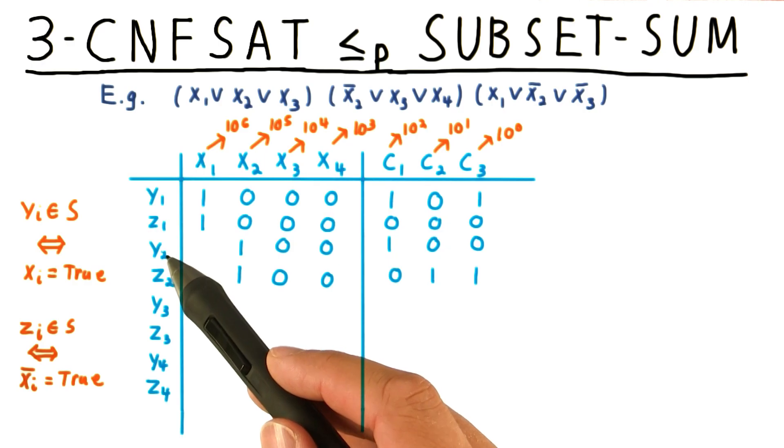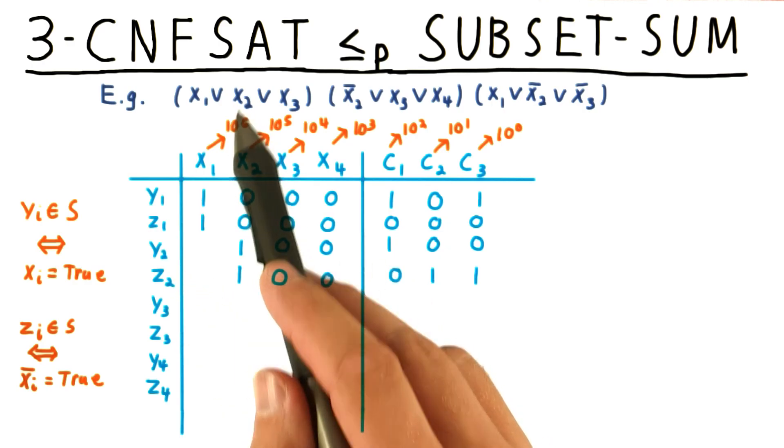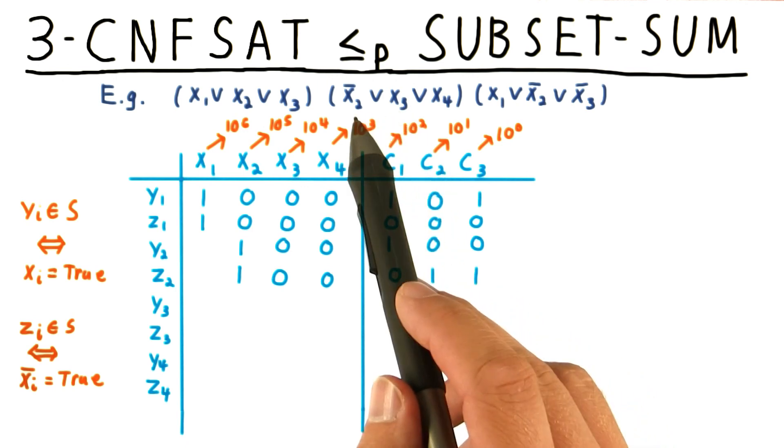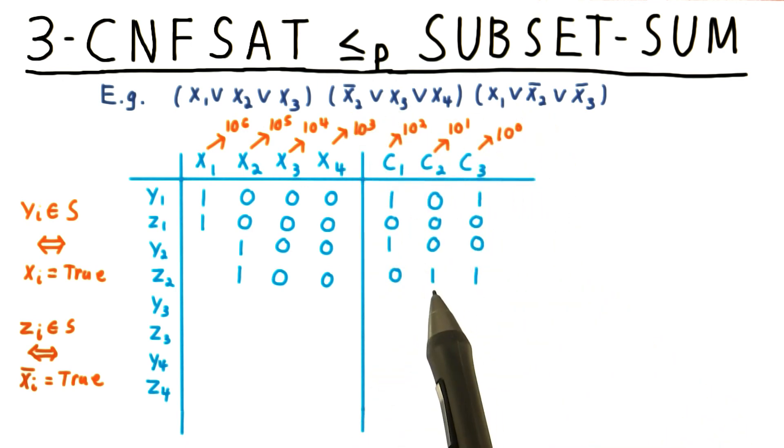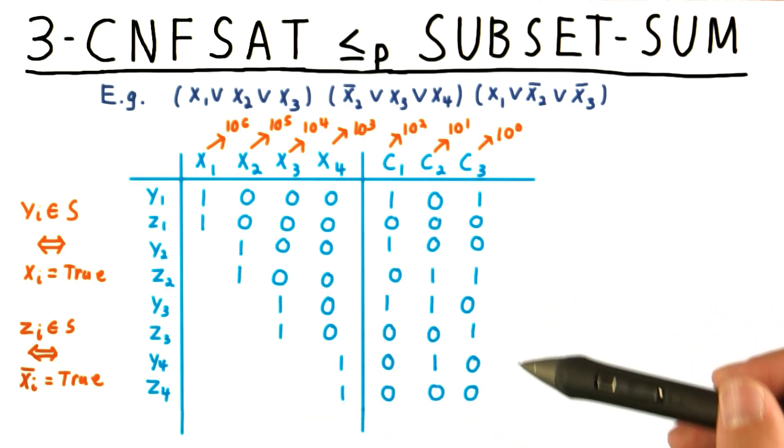We do the analogous procedure for y2 and z2. The literal x2 appears in the first clause, and the literal x2 bar appears in clauses 2 and 3. And we do the same for the variables x3 and x4.